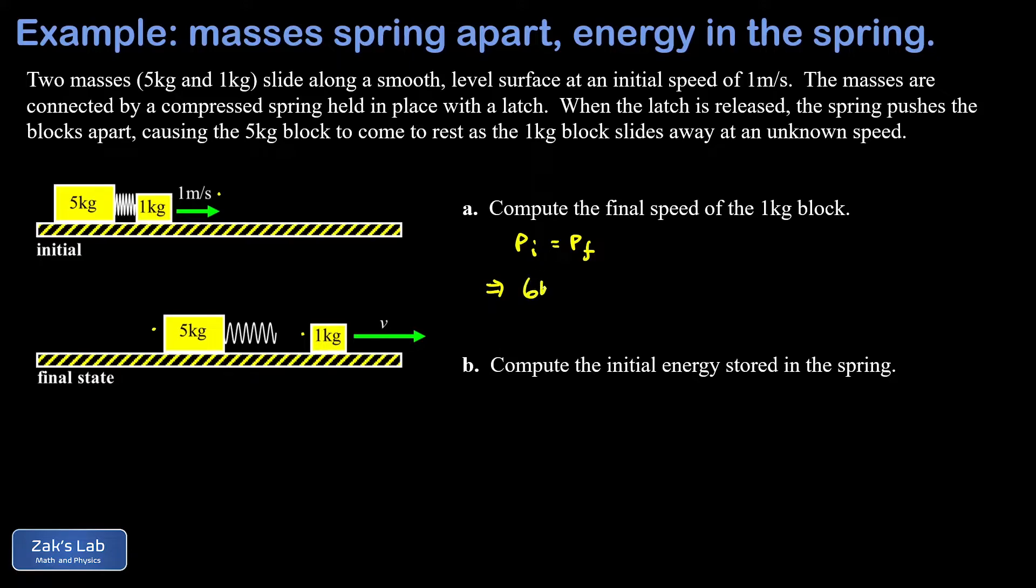Our final momentum is very simple because we were told the five kilogram block comes to rest during this spring expansion process. So the only thing that's moving in the final state is the little one kilogram mass and then the unknown final velocity. We can quickly solve for v here.